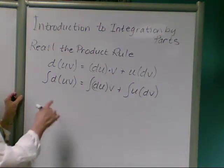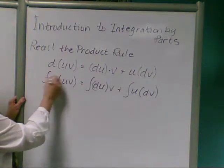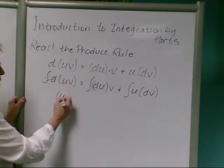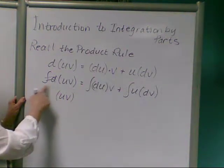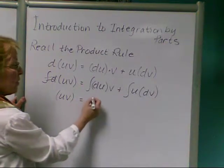So let's see what we have. We know that the integral of the derivative causes the resultant product uv to appear because these two operations are inverses and cancel each other.